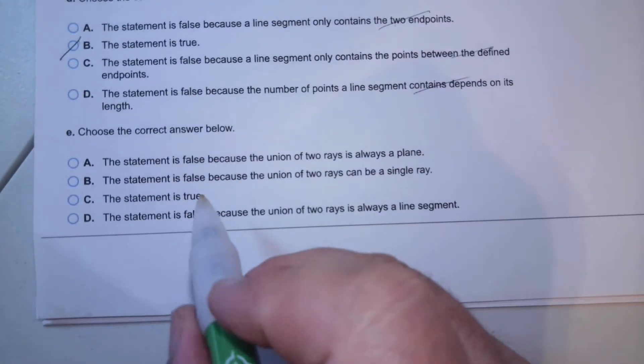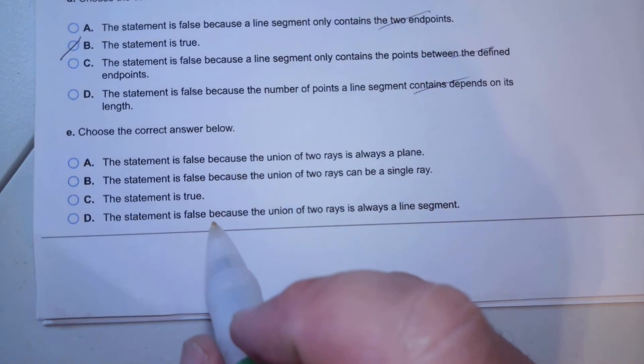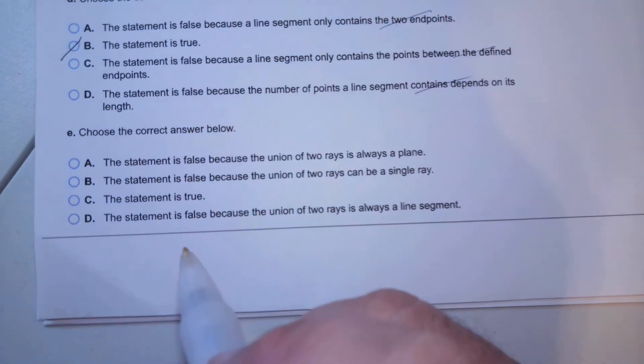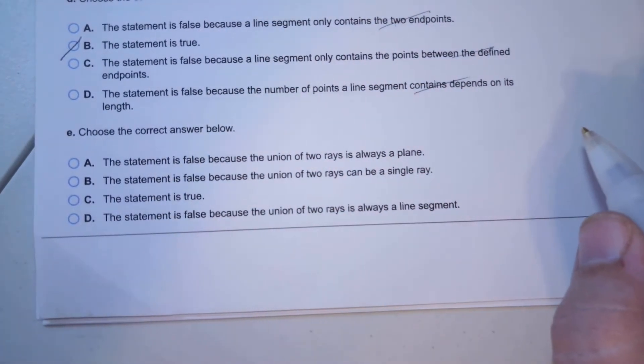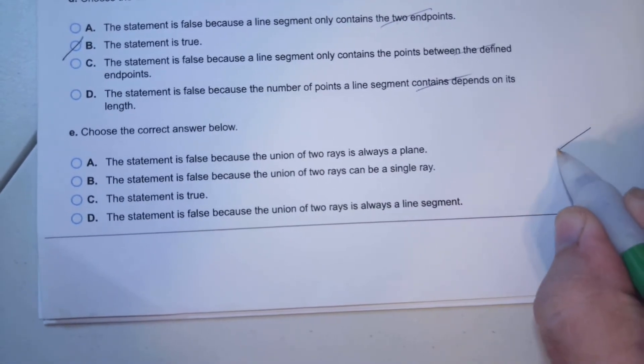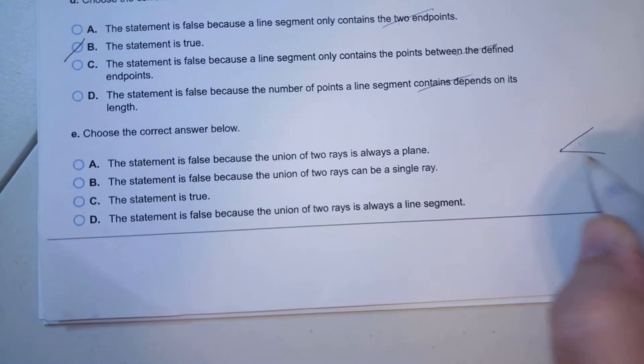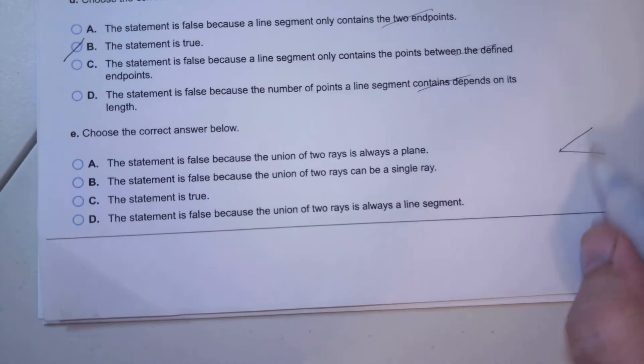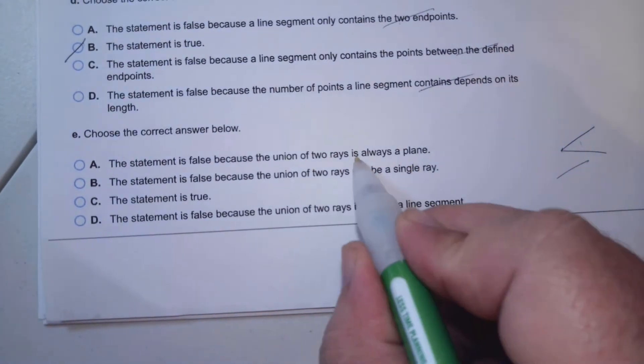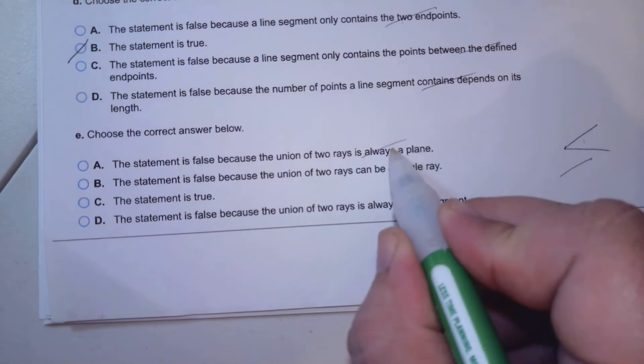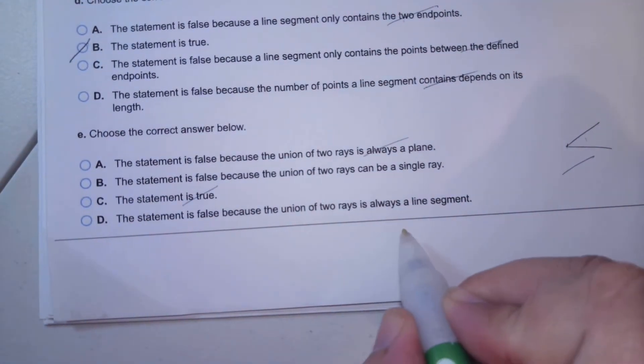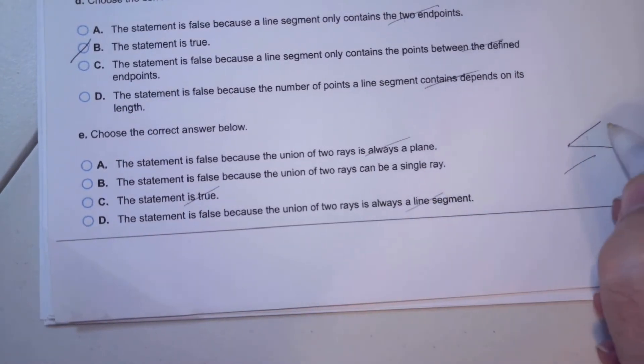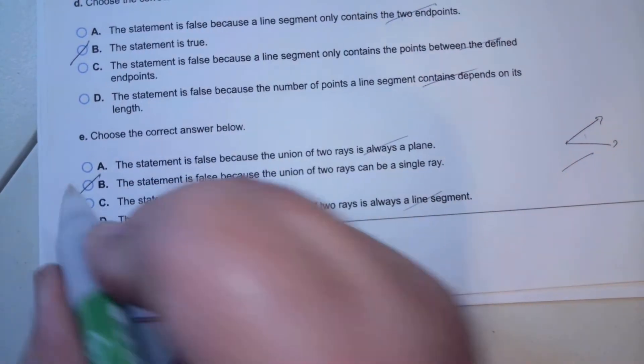The last one: the union of two rays is always a line. I have a ray here and a ray here. It creates an angle, it's not a line, so it's got to be false. Or it could be a single ray. It's not always a plane. It can't be a line segment because a ray goes on infinitely. So it's B.